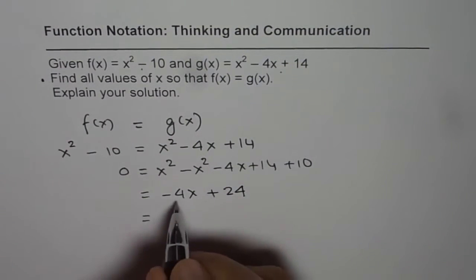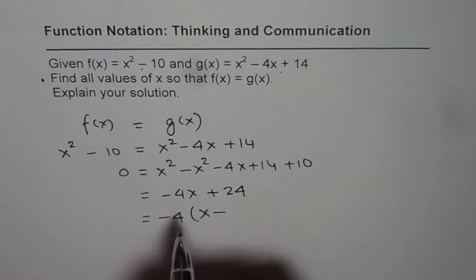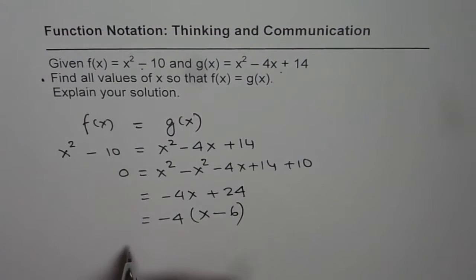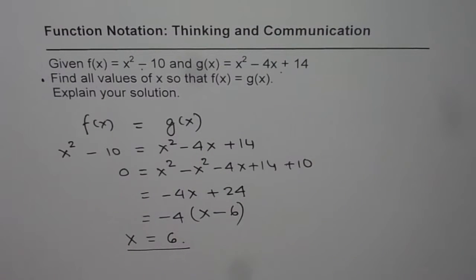Now we can take minus 4 common. We are left with x minus 6. This is equal to 0. That is possible only if x is equal to 6. So that is the solution. x equals 6 is our solution.